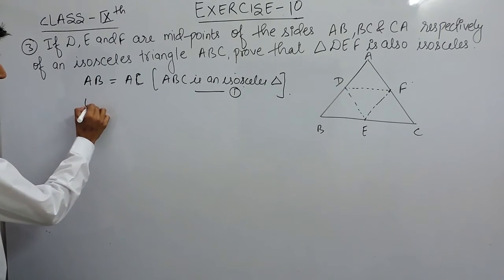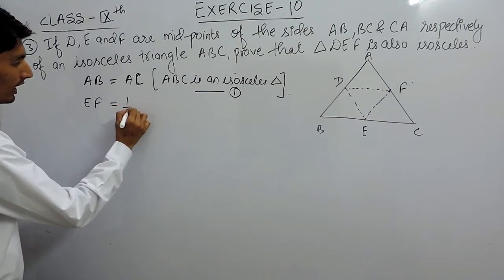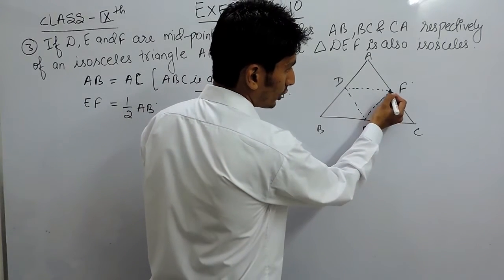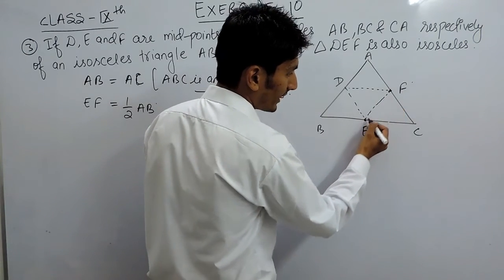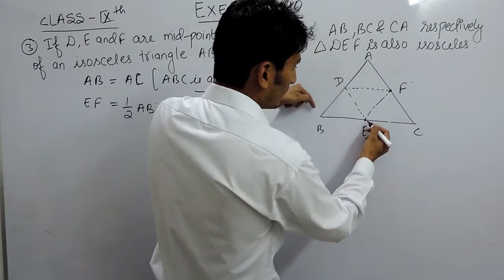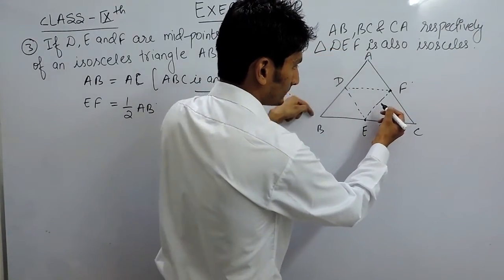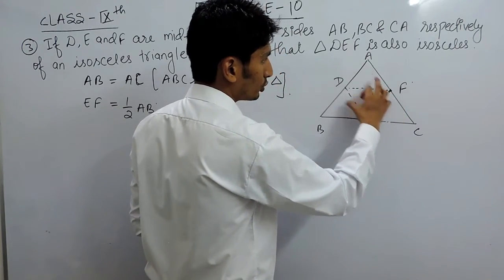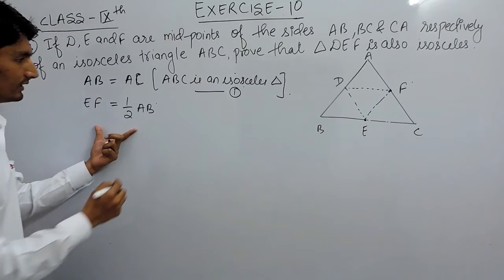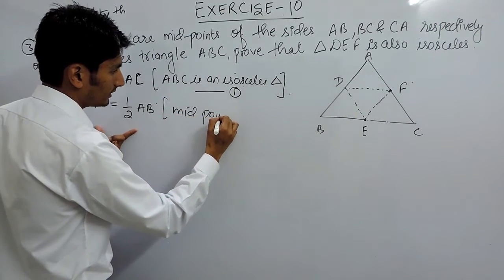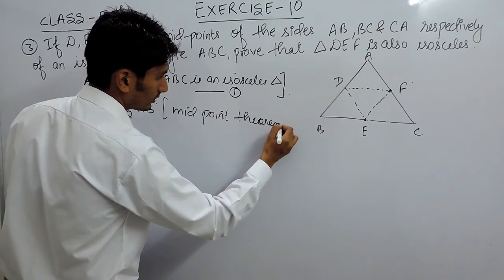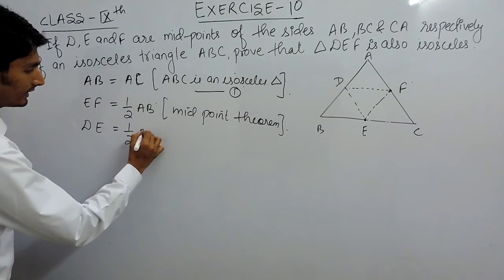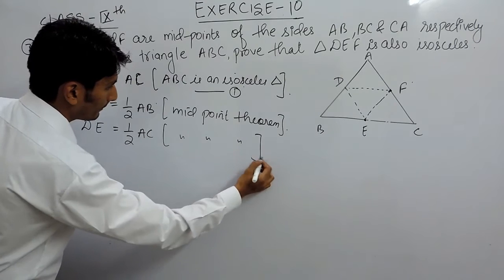EF should be equal to half of AB. This is because according to the midpoint theorem, if we join the midpoints of any two sides in a triangle, this line should be parallel to the third side and equal to half of it. So since F and E are the midpoints of two sides, EF equals half of AB. Similarly, DE should be equal to half of AC, again because of the midpoint theorem.